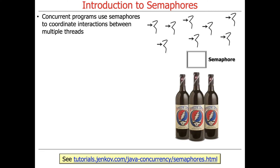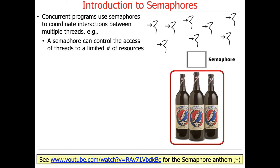Concurrent programs use semaphores to coordinate interactions between multiple threads, and that's exactly what you do in programming assignment 1b. This particular example is going to use Grateful Dead wine bottles.